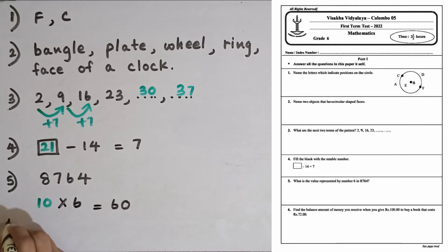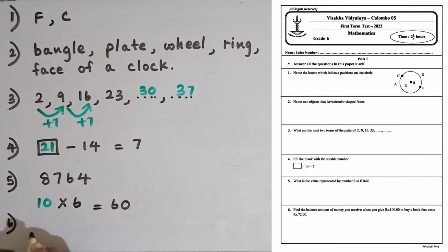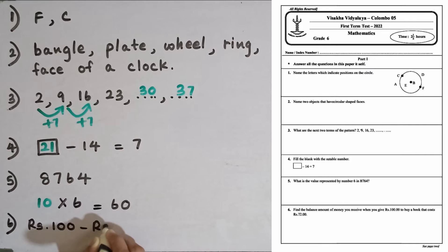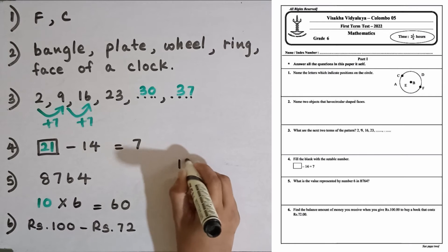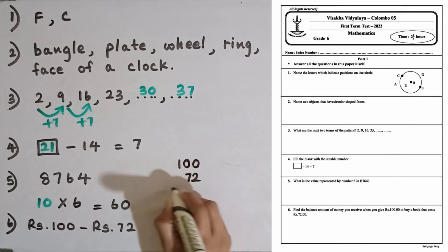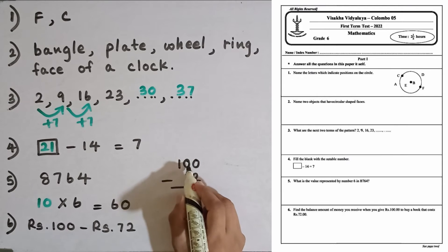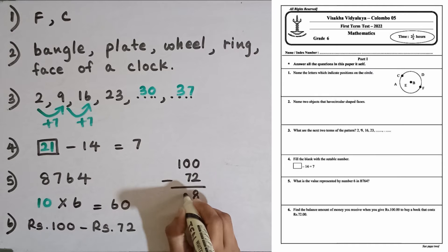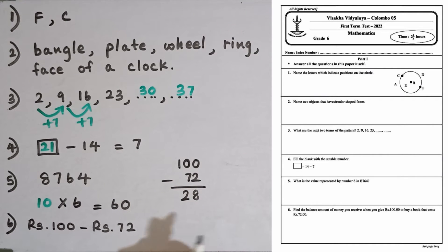Question number six: find the balance amount of money you receive when you give 100 rupees to buy a book that costs 72 rupees. To find the balance we subtract 72 rupees from 100 rupees. 100 minus 72: 10 minus 2 is 8, then the remaining is 9, 9 minus 7 gives 2. So the balance is 28 rupees.